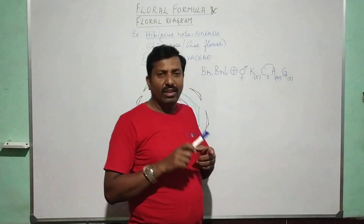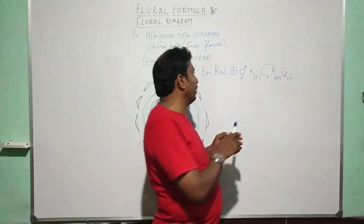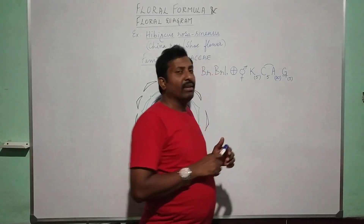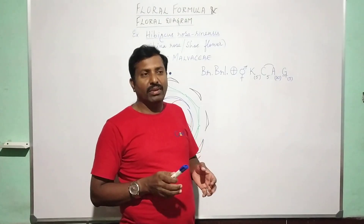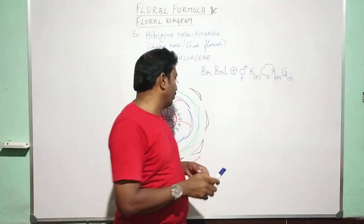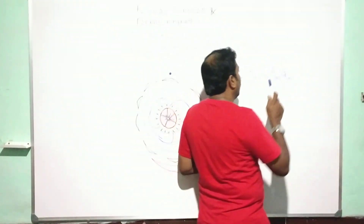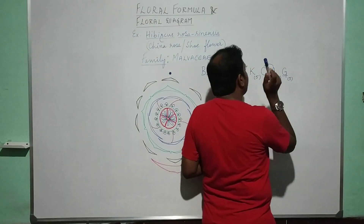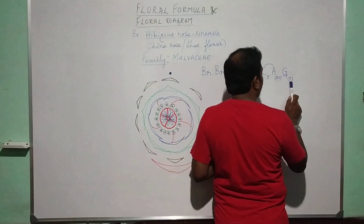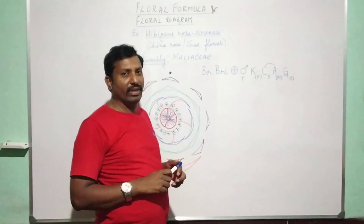Corolla with 5 petals, with twisted aestivation — regular overlapping of the margin — and without any fusion. Androecium with an indefinite number of stamens with monadelphous condition, having a staminal tube shown around the ovary. Very slightly fused with the corolla tube — not exactly epipetalous. Gynoecium with pentacarpellary syncarpous superior ovary, that is hypogynous condition.